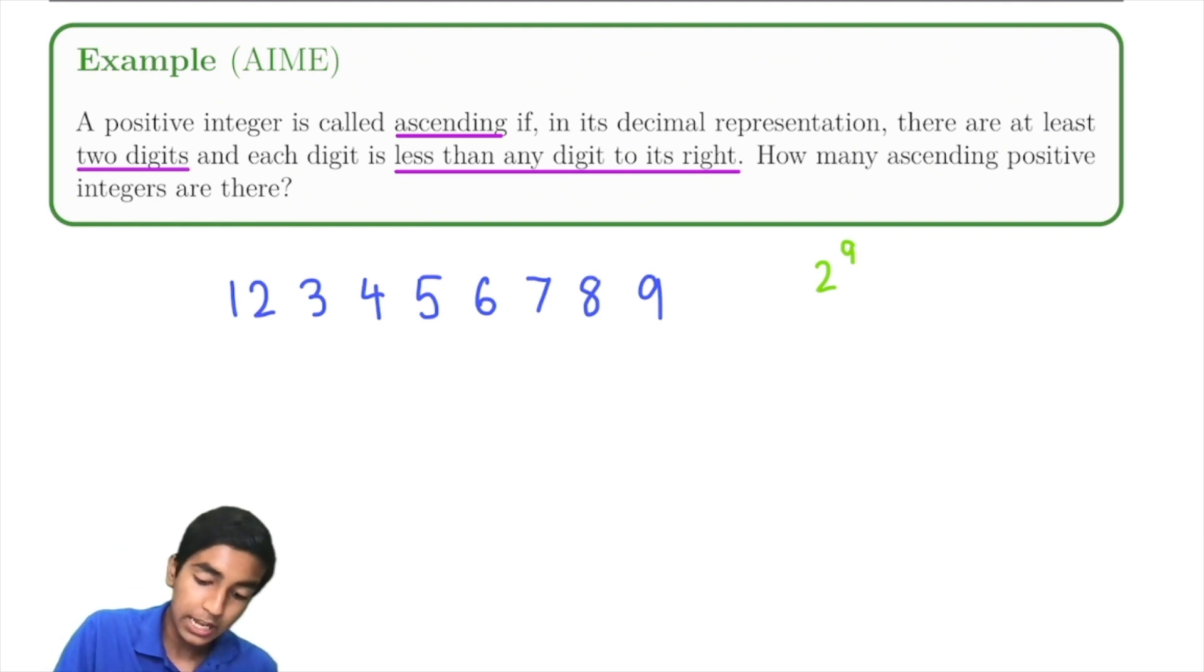We can actually count this by just doing 2 to the 9, where we have two choices for each number. We put it in our ascending integer, or it's not part of our ascending integer. That's nice, because only one permutation valid for a given set of numbers.